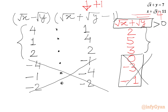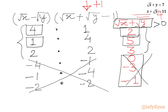Now we have three systems. System number 1: root x minus root y equals 4 and root x plus root y equals 2. System number 2: root x minus root y equals 1 and root x plus root y equals 5. System number 3: root x minus root y equals 2 and root x plus root y equals 3.